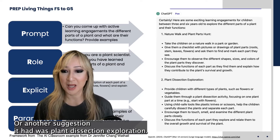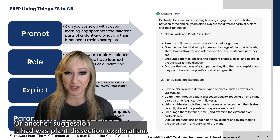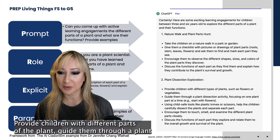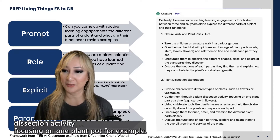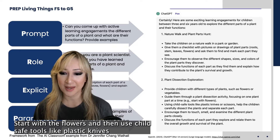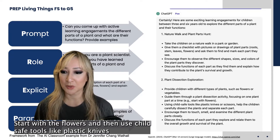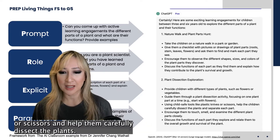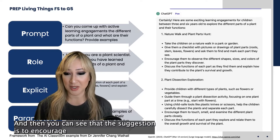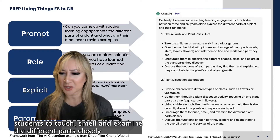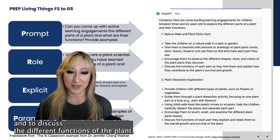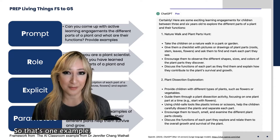Another suggestion was a plant dissection exploration. Provide children with different parts of the plant and guide them through a plant dissection activity focusing on one plant part at a time. For example, start with the flowers, then use child-safe tools like plastic knives or scissors and help them carefully dissect the plants. Encourage students to touch, smell, and examine the different parts closely and to discuss the different functions of the plant.